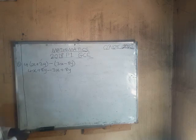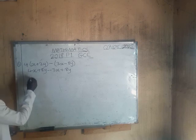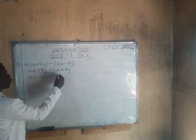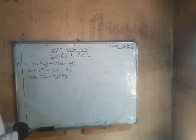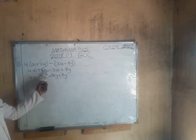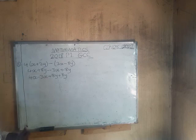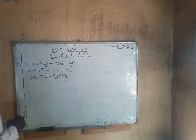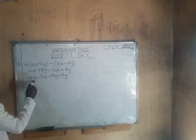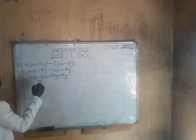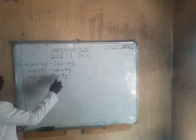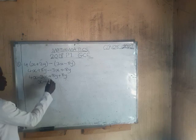After removing the brackets, we now collect the like terms. We have 4x minus 3x, plus 8y plus 8y. Remember, when collecting like terms, the signs must be maintained — you pick each term with its sign. So 4x minus 3x gives x, and 8y plus 8y gives 16y.